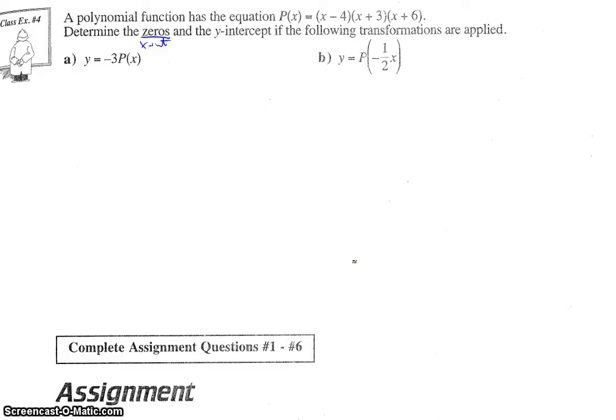All right everybody, let's finish up this last example on Lesson 6 here. So a polynomial function has the equation P(x) = (x - 4)(x + 3)(x + 6).